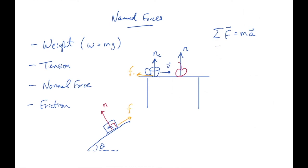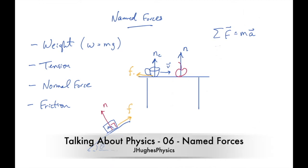Those are our four named forces: weight, which is the force of gravity; tension, exerted by strings, ropes, and chains — constant in magnitude along an ideal massless string, and it always pulls, never pushes; the normal force, which keeps solid objects from moving through each other, always perpendicular to the surface; and friction, which keeps surfaces at rest relative to each other or brings sliding surfaces to rest, always parallel to the surface. Now let's move into Newton's second law and free body diagrams.